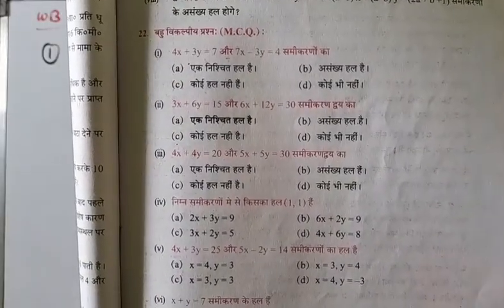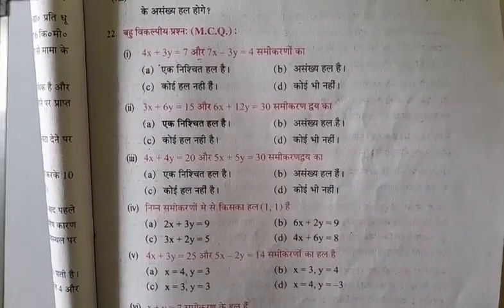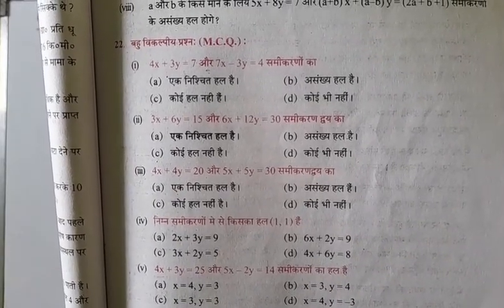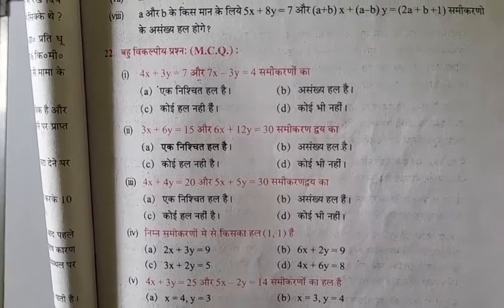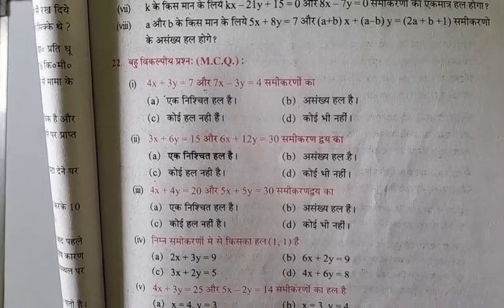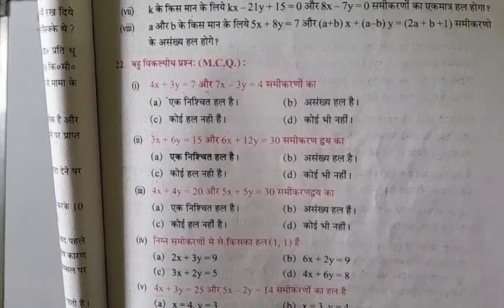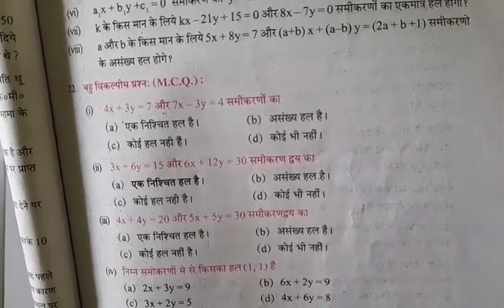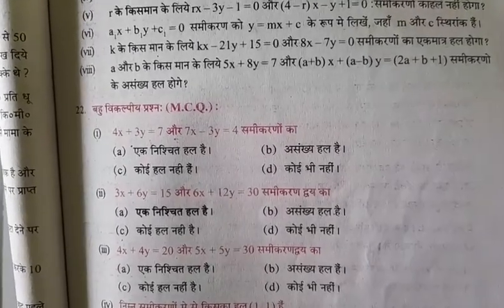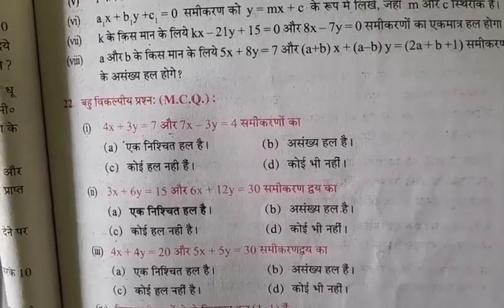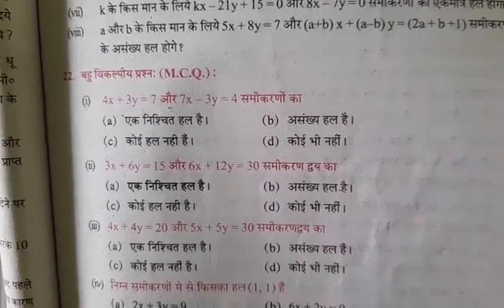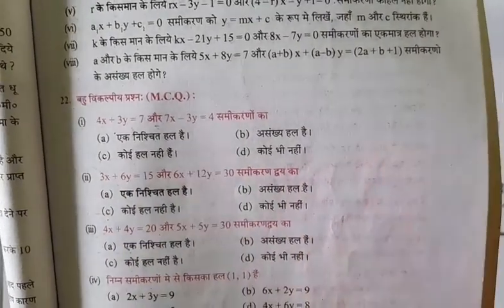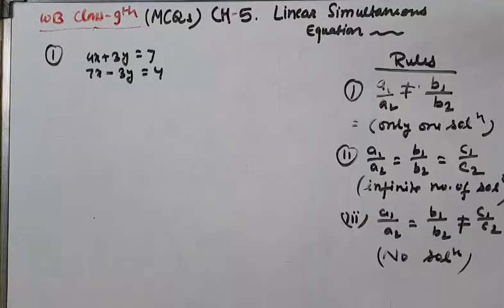This is a very important MCQ. Question number 22 is given: 4x plus 3y equals 7 and 7x minus 3y equals 4. These are two equations. The options are: no solution, only one solution, or infinite solutions. We will see how to determine which applies.